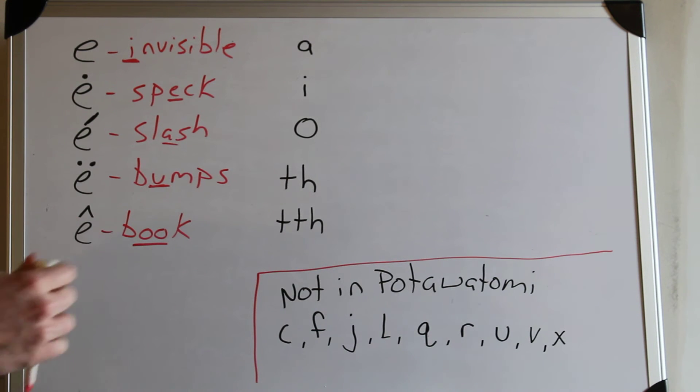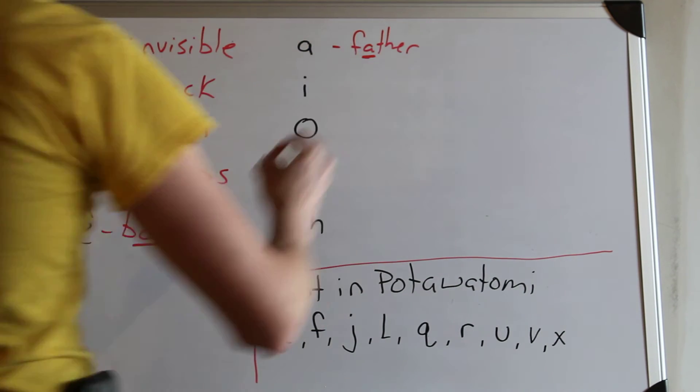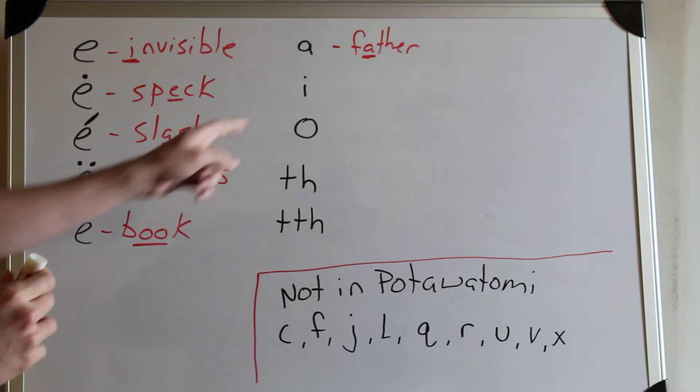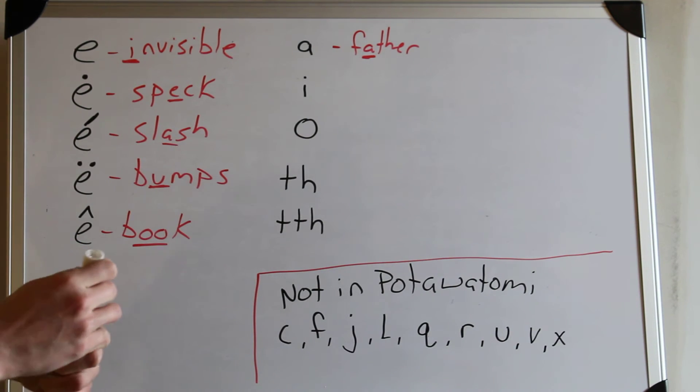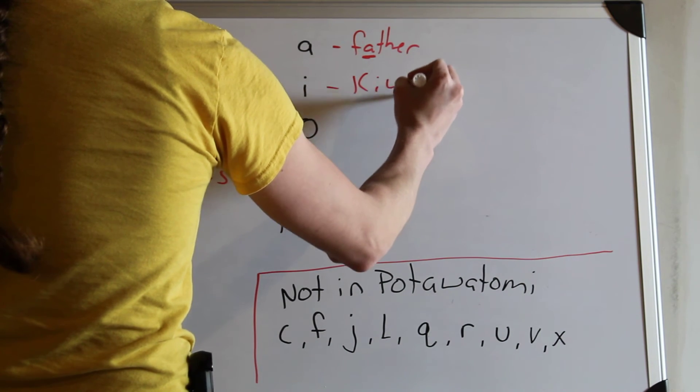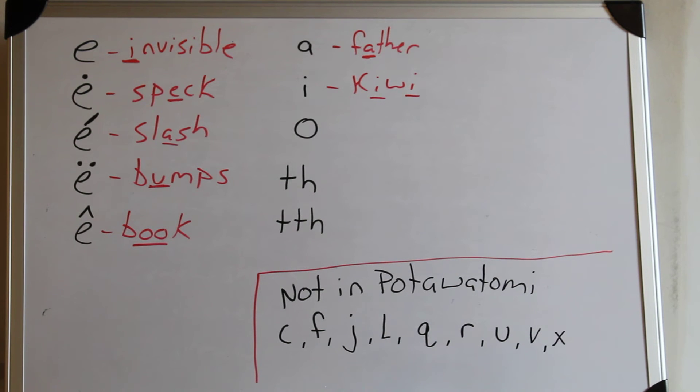Now going over to the other side of here, we have letter A. Anytime you see that letter it's going to be ah as in father. It will not make any other sound. Whenever you see an I, it's going to be pronounced E, like in kiwi: E, E.